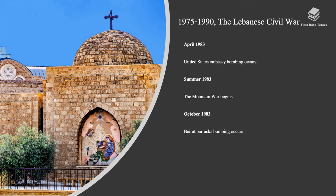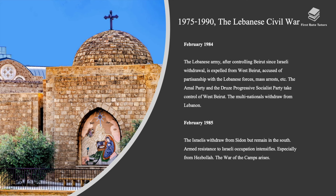In April 1983, the United States Embassy bombing occurred. During the summer of 1983, the Mountain War began, and in October 1983, the Beirut barracks bombing occurred. In February 1984, the Lebanese army, after controlling Beirut since the Israeli withdrawal, was expelled from West Beirut, accused of partisanship with the Lebanese Forces and mass arrests. The Amin Jumayel party and the Progressive Socialist Party took control of West Beirut, and the multinational forces withdrew from Lebanon.